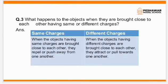Question number 3: What happens to the objects when they are brought close to each other having same or different charges? Same charges: When objects having same or like charges are brought close to each other, they repel or push away from one another. Different charges: When objects having different charges are brought close to each other, they attract or pull towards one another.